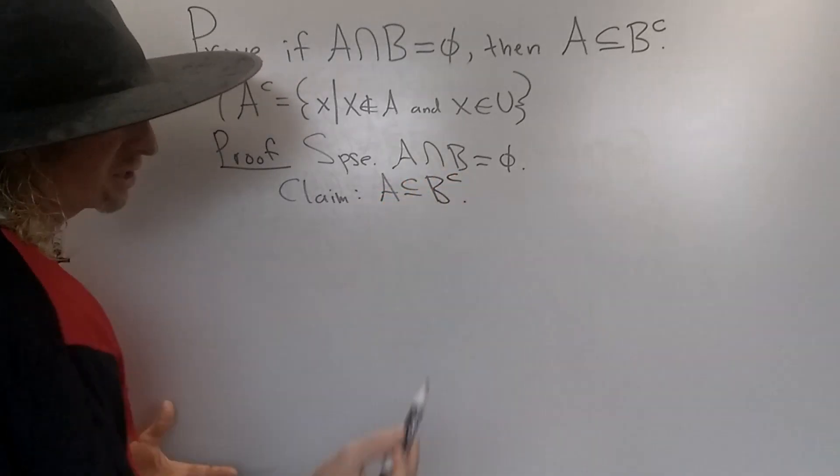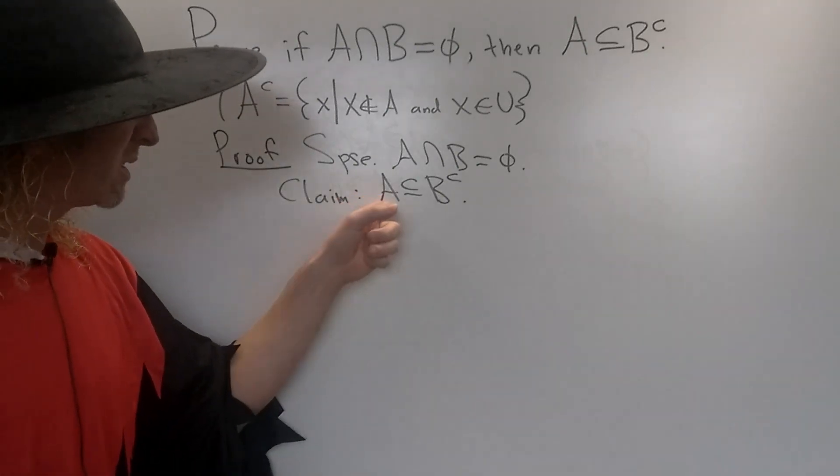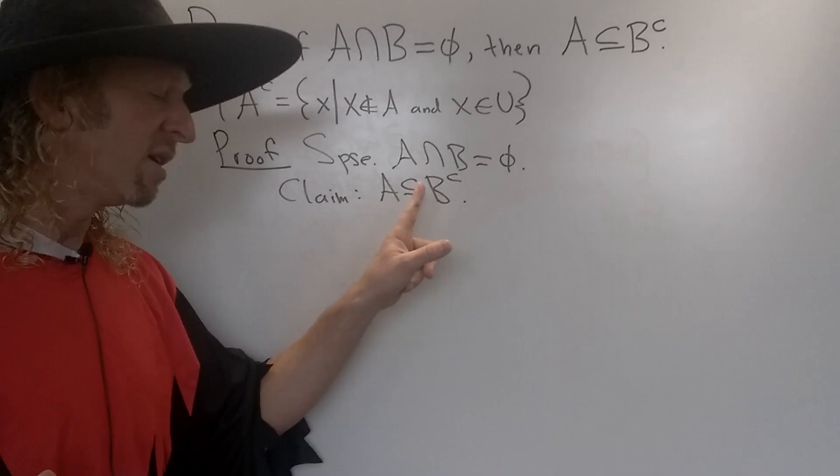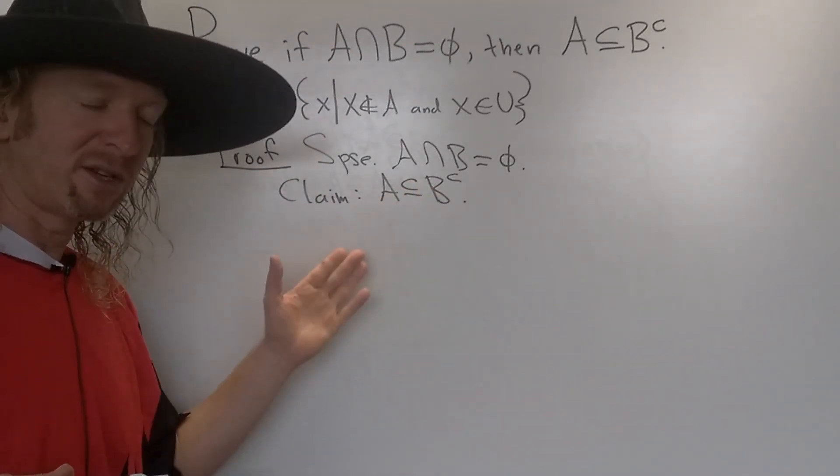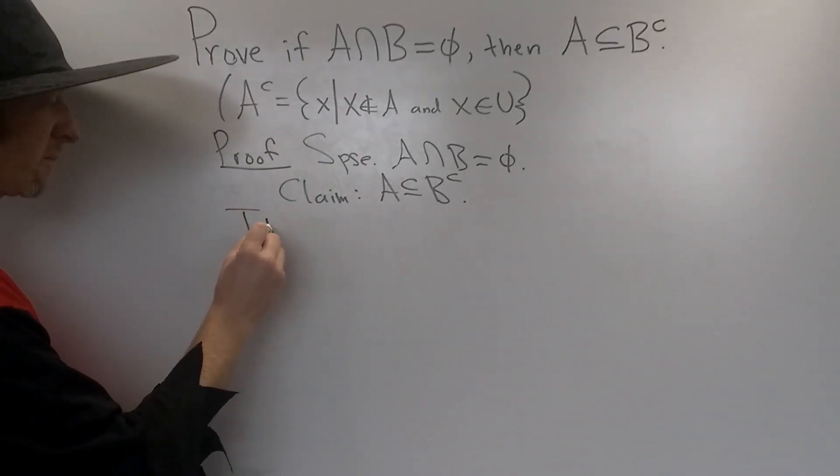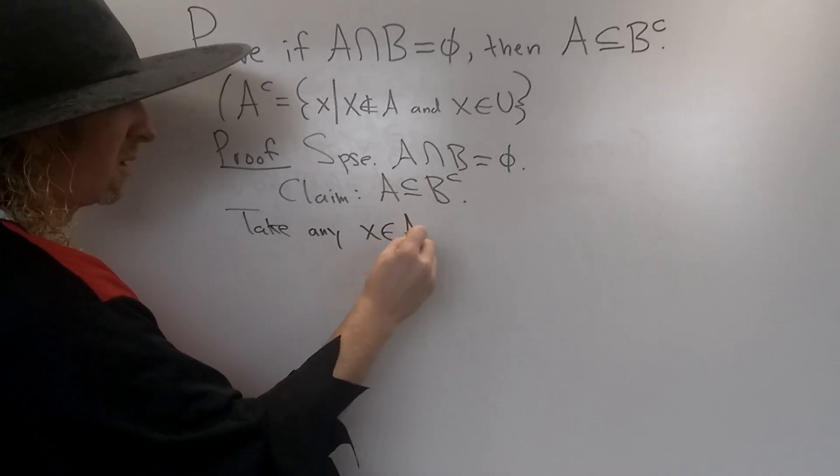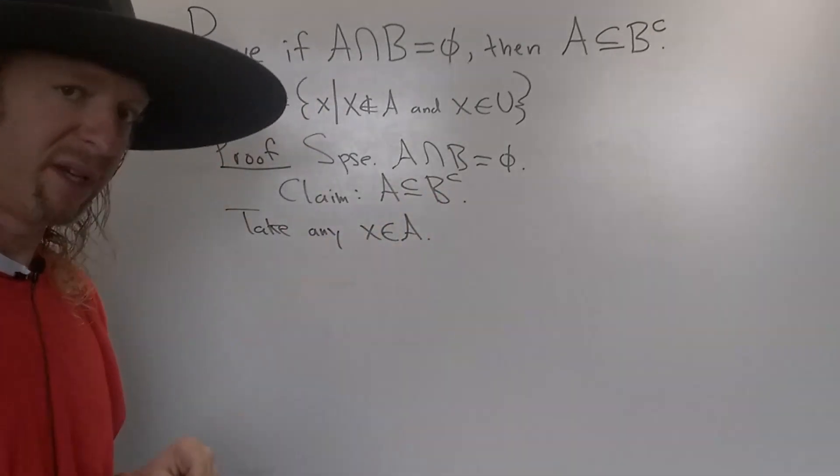Why am I writing it again? Just for added clarity. So to show one set is a subset of the other, we have to show that every element in this set is also in this set. So we'll start by taking any element in this set, and then trying to show it's here. So take any x in A. So now we have to show that it's in B complement.